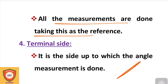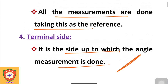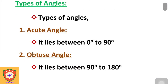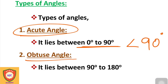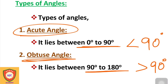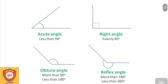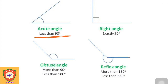Now let's look at the different types of angles. The first type is the acute angle, which ranges from zero degrees to 90 degrees. The obtuse angle ranges from 90 degrees to 180 degrees. The acute angle is less than 90 degrees.